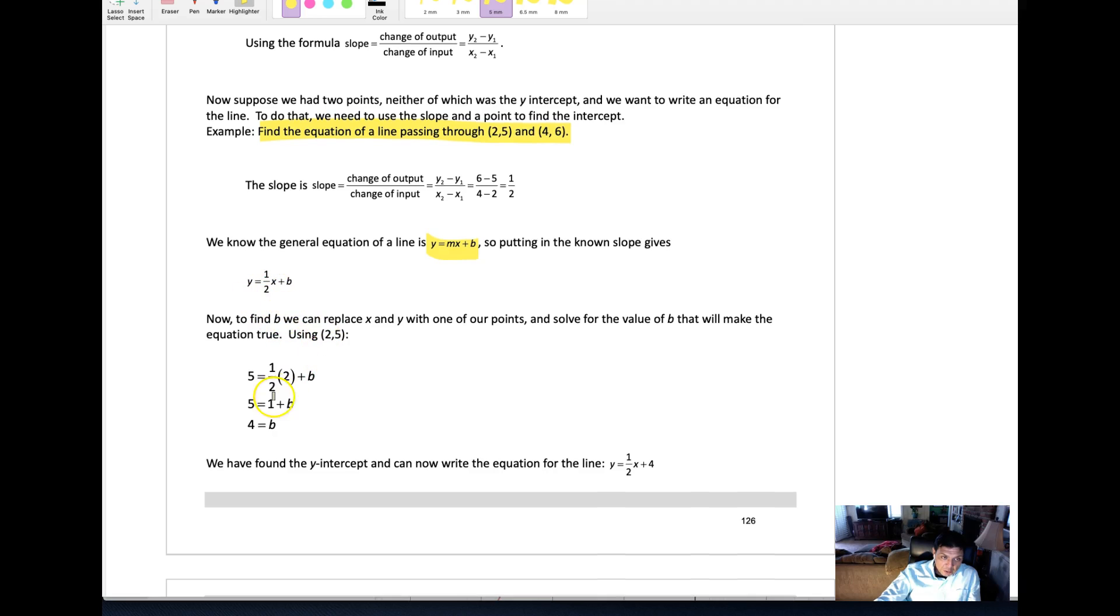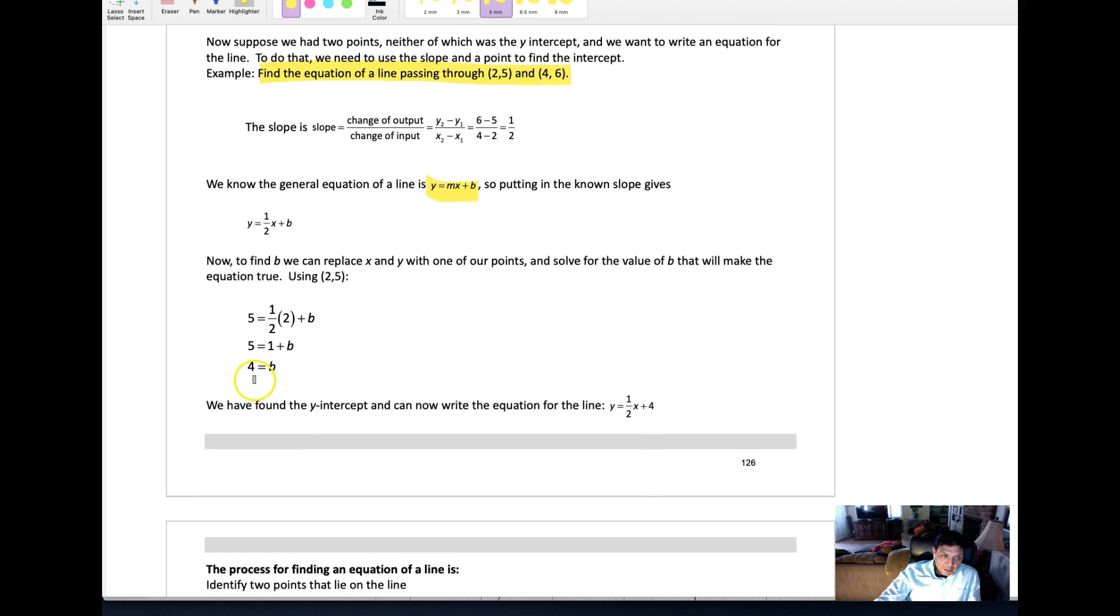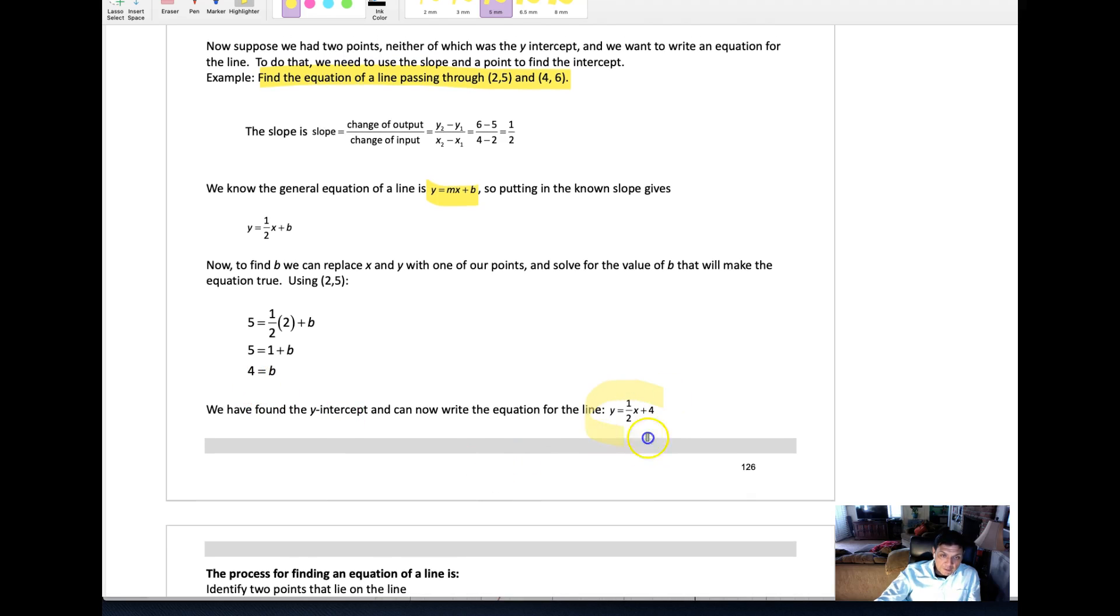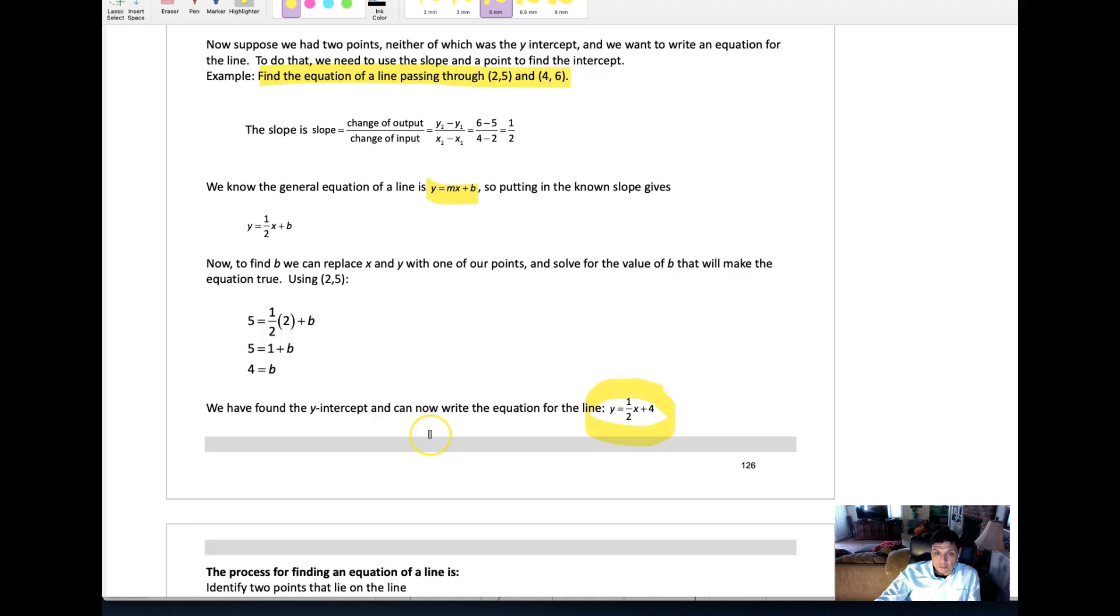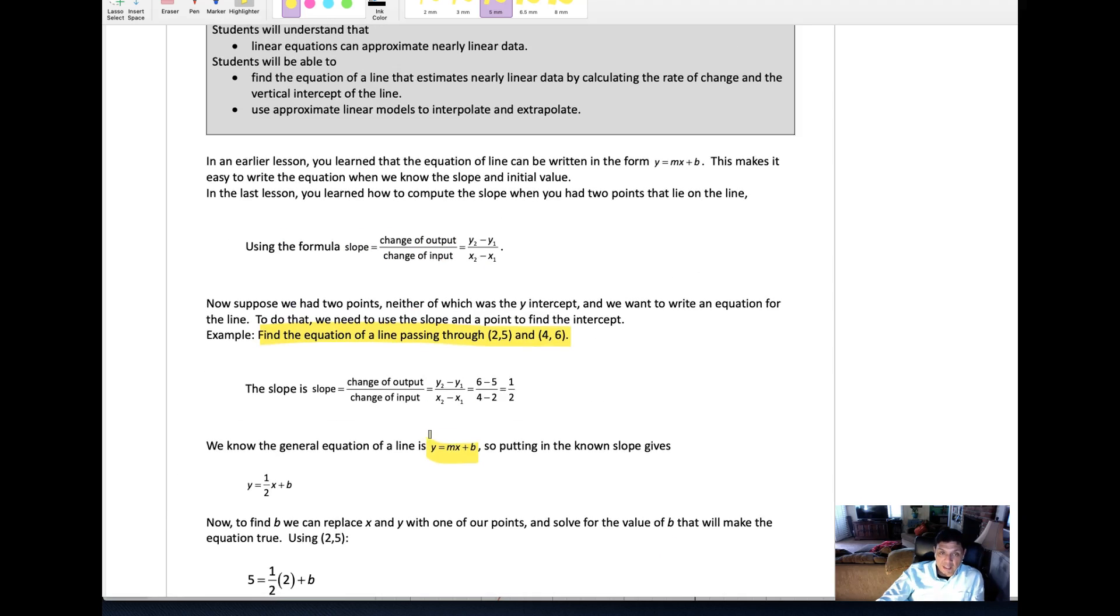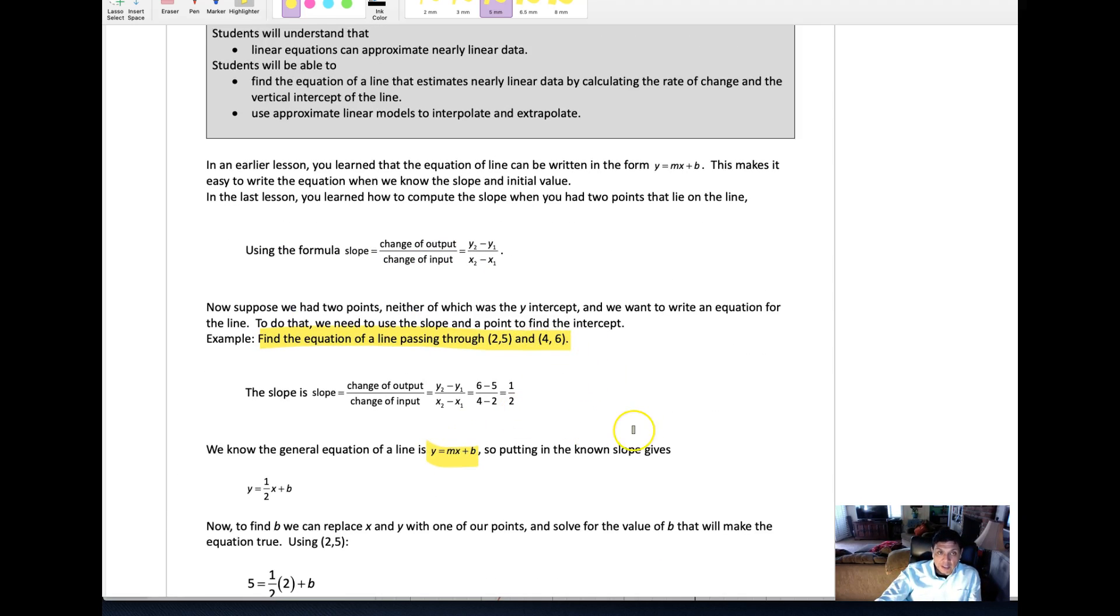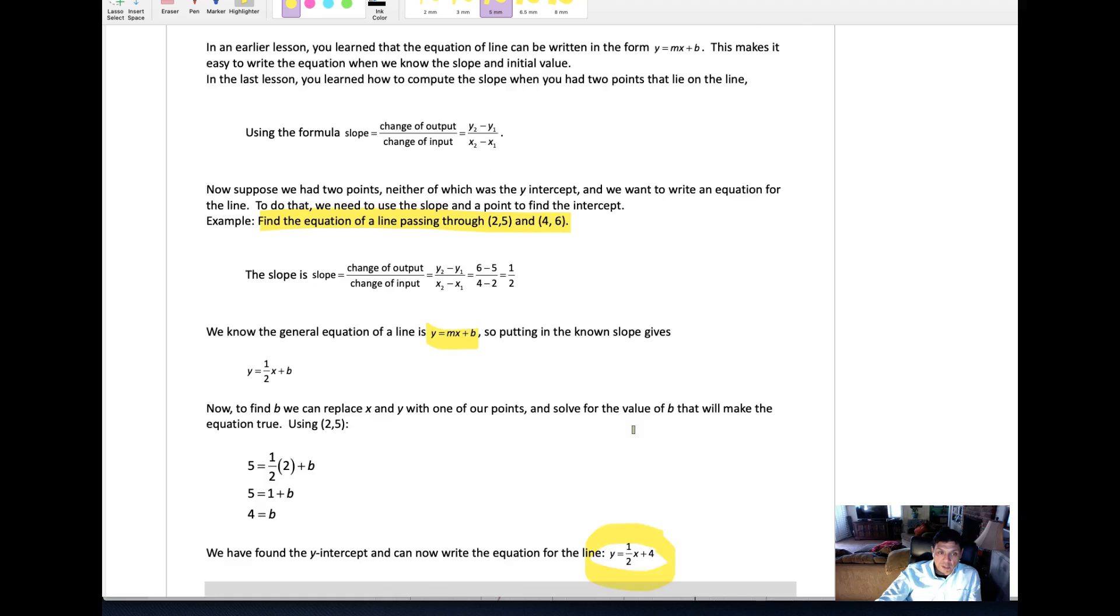When you do that, you get it—in this case you get four—and then now you have this new equation, y equals one-half x plus four, which would be the equation of the line that goes through those two points. Again, this is just numbers, there's no context, which we'll look at in a little bit.